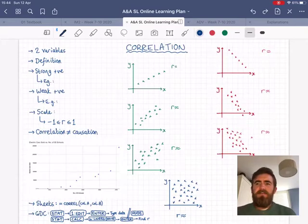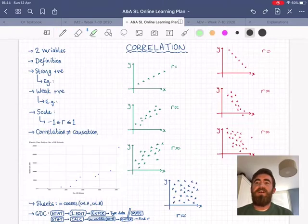But next, we need to look at two variables, how two different variables might interact, what their relationship might be, and the first thing we're going to do with two variables is look at correlation.